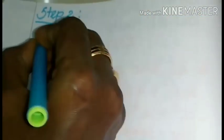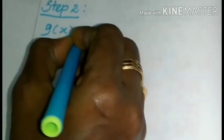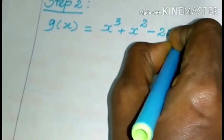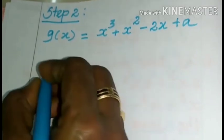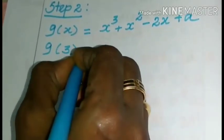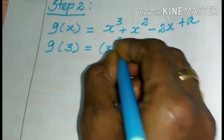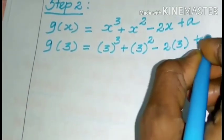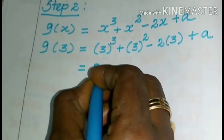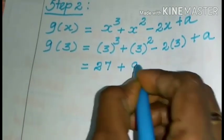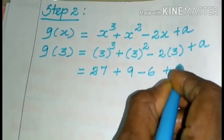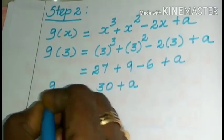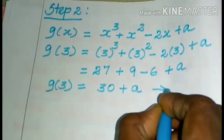Now we move on to Step 2. Here we take g(x) = x³ + x² − 2x + a. We substitute the zero of the divisor, which is 3. So g(3) = (3)³ + (3)² − 2(3) + a = 27 + 9 − 6 + a = 30 + a. This is Equation 2.